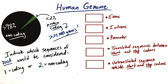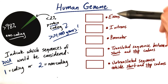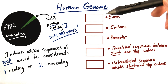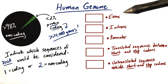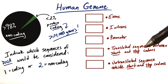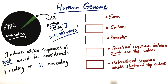I want you to indicate which sequences in this list would be considered either coding or non-coding. We're going to use the number 1 to represent coding and 2 to represent non-coding. In each box, put either 1 or 2 to indicate whether each sequence — starting with exons — would be considered part of coding or non-coding sequence. Go ahead and pick which answer you think is best for each item in the list.